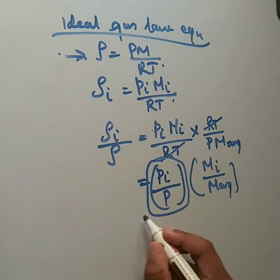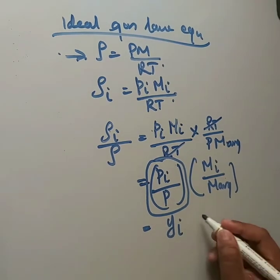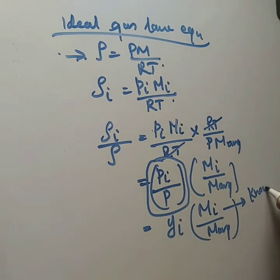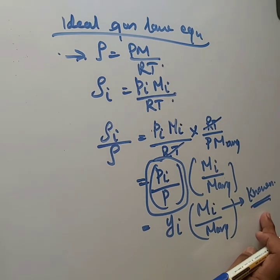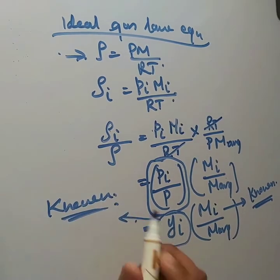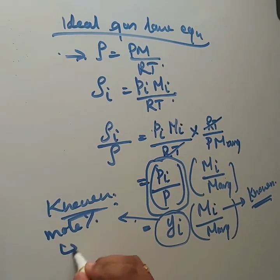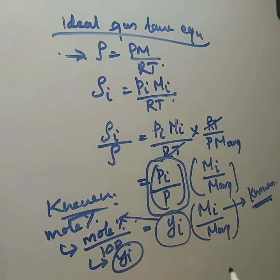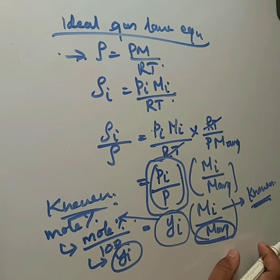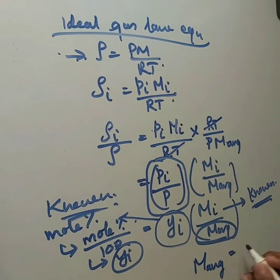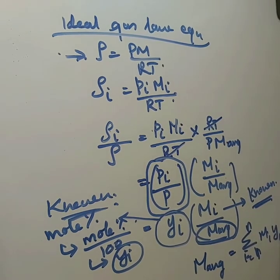So ρᵢ/ρ = yᵢ × Mᵢ / M_avg. The molecular weight of each species is known, and the mole fraction is obtained by dividing mole percentage by 100. The average molecular weight is not directly given, so we use the equation: M_avg = Σ yᵢMᵢ, which you already studied in the last semester.